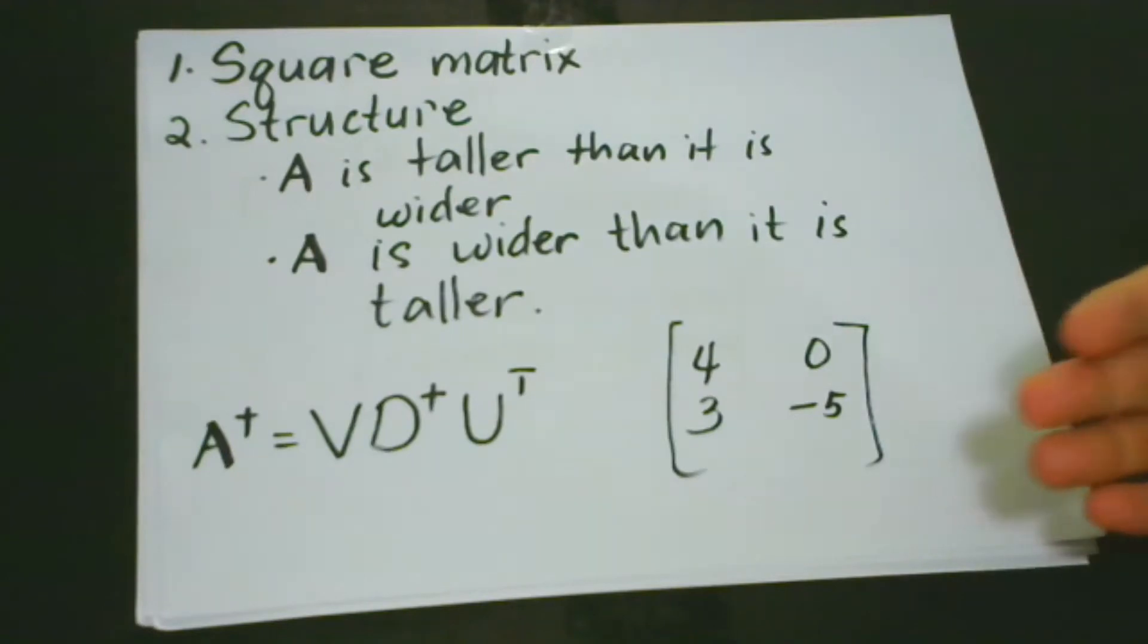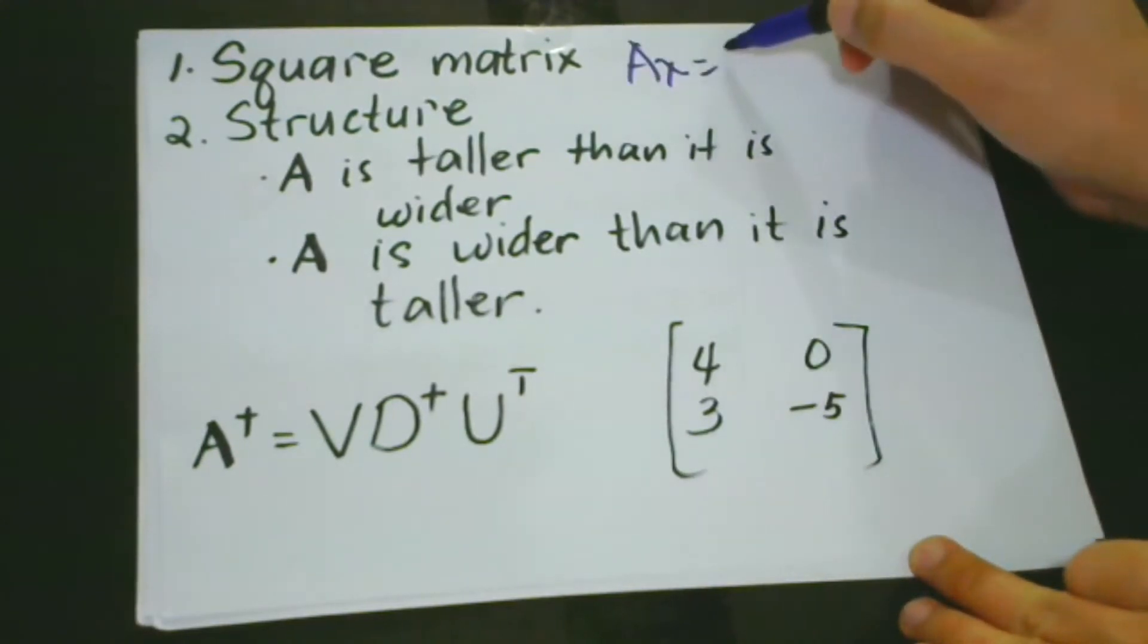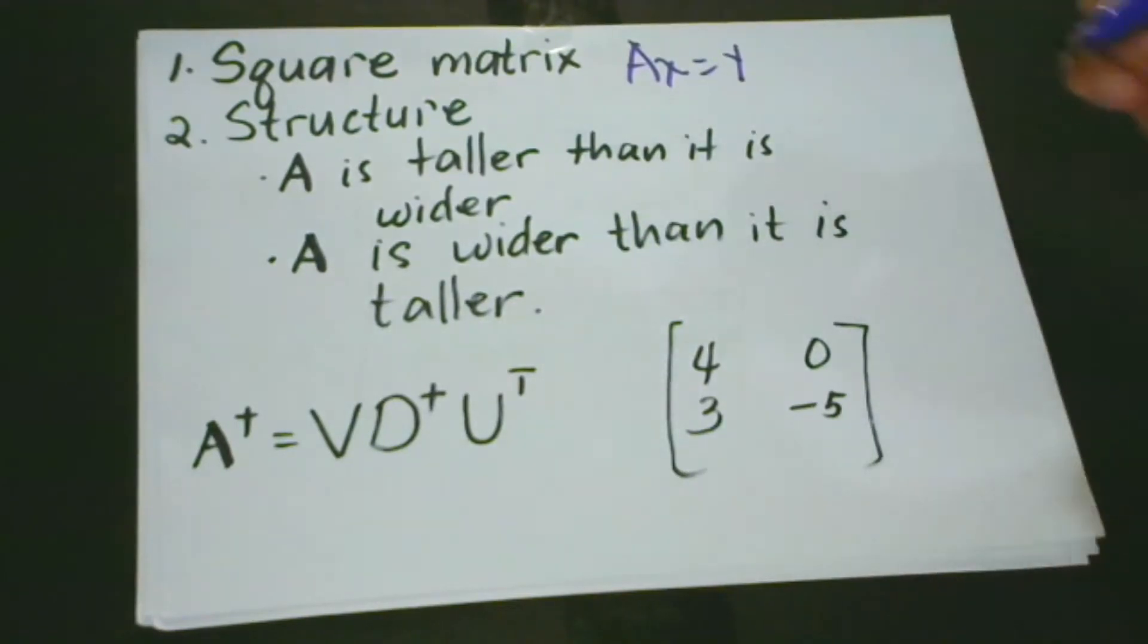So basically what we do here is we make a left inverse of a matrix A so that we can solve a linear equation A times X equals Y. And how to solve a linear equation to do this, we're going to left multiply each side.